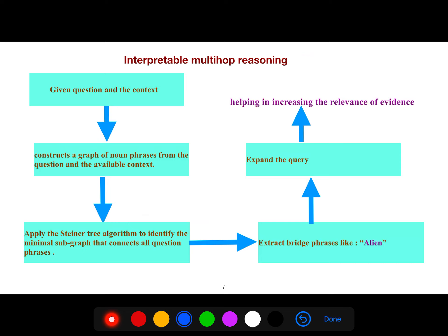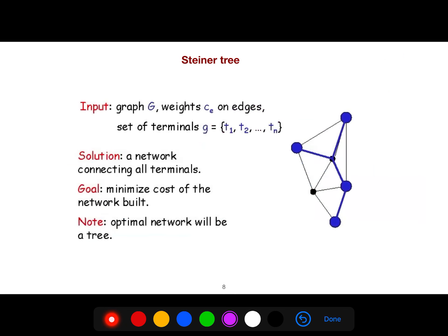In interpretable multi-hop reasoning, this algorithm STEP works as follows: given a question in the context, first we construct a graph of noun phrases from the question. Then we apply Steiner tree. You have some Steiner trees, some nodes, some terminals. Then you create Steiner points - using these, you can connect all of these nodes together. The aim of these Steiner points is to find a path that creates a single connected component of the graph. After that, we create bridge phrases like 'alien.' These bridge phrases allow us to expand the query and help in increasing the relevance of evidence.